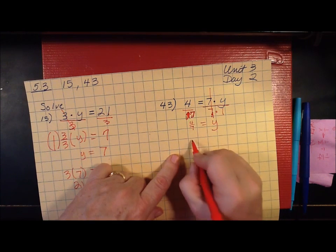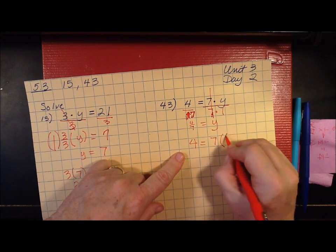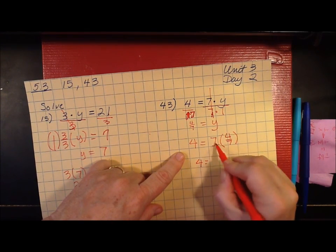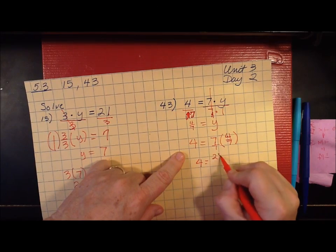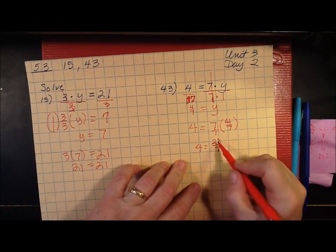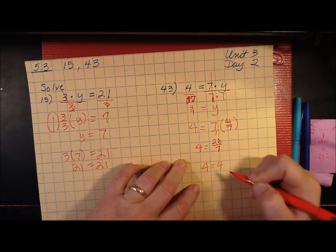So the answer is 4 7's. And let's check that. 4 equals 7 times 4 over 7. 4 equals... 7 times 4 is 28. 1 times 7 is 7. 7 goes into 28, 4 times! And 4 equals 4.